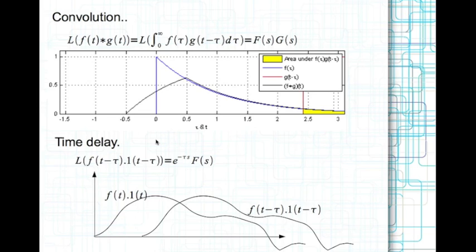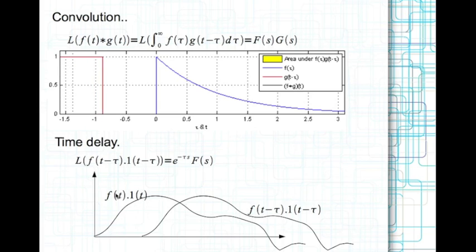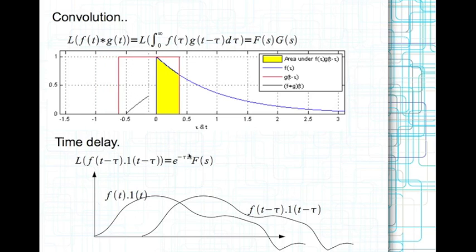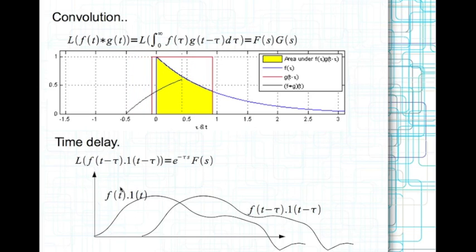We also have the Laplace transform of time-delayed functions. Starting with function f(t), truncated using the unit step function since we are only interested in positive time. If you apply a time shift of tau, moving the function forward in time, the Laplace transform of that time-delayed function is e to the power of minus tau*s times capital F(s), where F(s) is the Laplace transform of f(t).